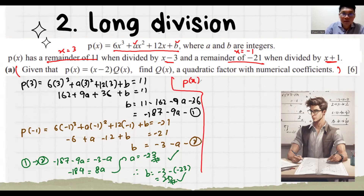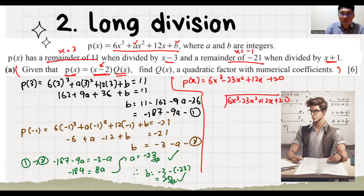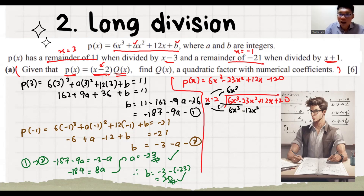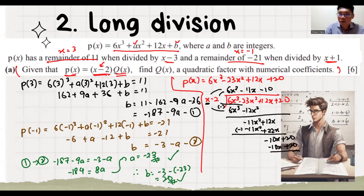Now we know our p(x). They say p(x) can be written with x minus 2 as the first factor and then q(x) as a quadratic factor. So we do long division, dividing by x minus 2. We use 6x squared since 6x squared times x gives 6x cubed. Remember: upper minus lower. We continue step by step and get minus 11x and then minus 10. So q(x) is 6x squared minus 11x minus 10. Congratulations!